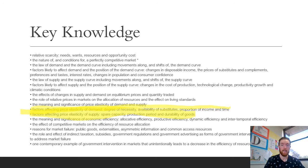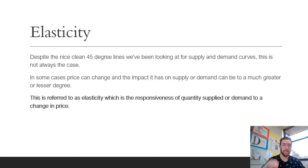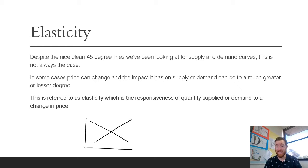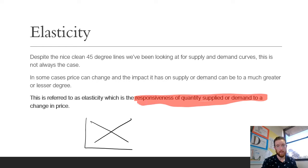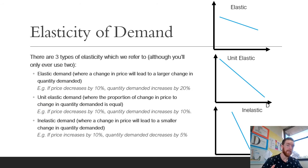We've only got two more things to go through in this topic and you are ready for a SAC in 2021, which is kind of scary. Despite the nice clean 45-degree line we tend to look at for supply and demand, this isn't always the case — it's actually rarely the case. Unit elasticity is not too common. In some cases, price can change and the impact on supply or demand could be to a much greater or lesser degree. We refer to this as elasticity, which is the responsiveness of quantity supplied or demanded to a change in price.